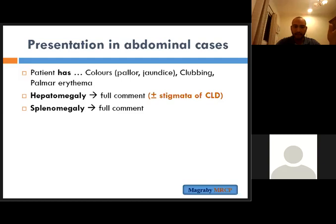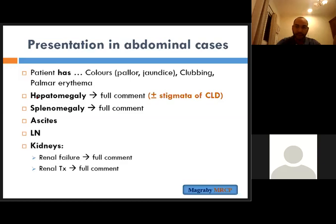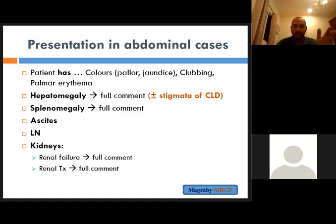Mention koilonychia, leukonychia, palmar erythema, Dupuytren's contracture, flapping tremors, AV fistula, any scar — mention all the surrounding and external features. Then you need to comment about the liver, the spleen, whether there is ascites or not, and lymph node examination — important if you find hepatomegaly or splenomegaly. For renal cases, comment on whether the patient has renal replacement therapy — peritoneal dialysis, hemodialysis catheter, or renal transplantation with a scar.